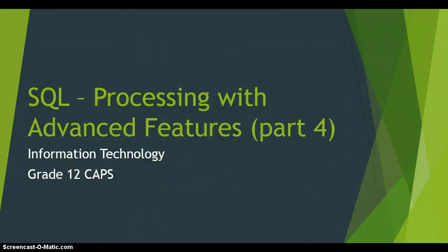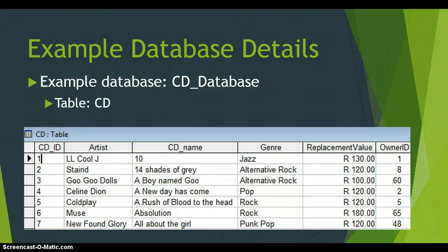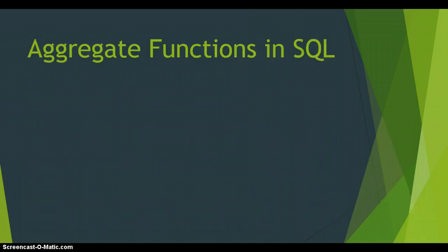This is Advanced Features Part 4 of how to do processing using the SQL SELECT statement, part of the Information Technology Grade 12 CAPS syllabus. We are using the CD database which has a table called CD containing: artist, CD name, genre, replacement value, and owner ID. In this lesson we're going to focus on aggregate functions — functions used to find summaries of data, such as maximum value, average value, or the sum of values.